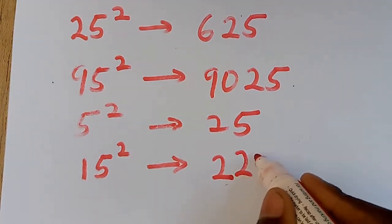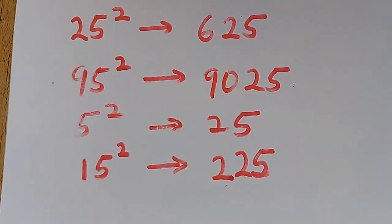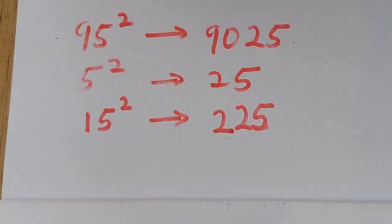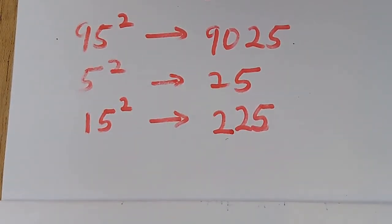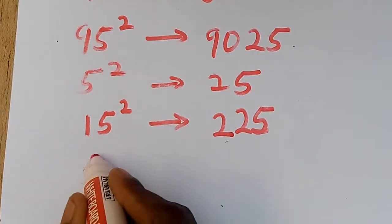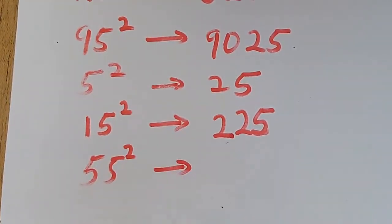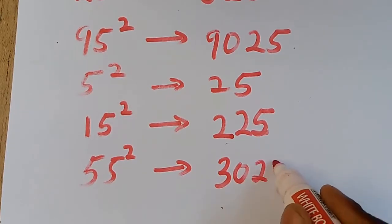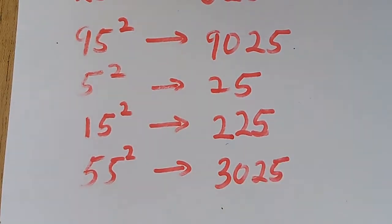I will unveil the trick — follow me — and at the end of this tutorial I'll give you the trick you can use to find the square of these numbers in even less than two seconds. So 55 squared gives us 3025.